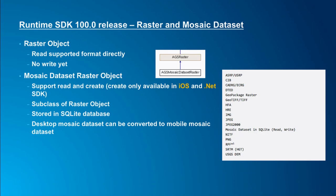We also have a subclass of raster object — the mosaic dataset raster object. This object supports reading and creating a mosaic dataset, an information model in the SQLite database for managing image collections. The create capability is currently only available in the iOS and .NET SDK. One important note: the mosaic dataset used in runtime is different from the ones created in ArcGIS ArcMap or ArcGIS Pro — you need to convert it to the runtime version, and we provide a tool for that.